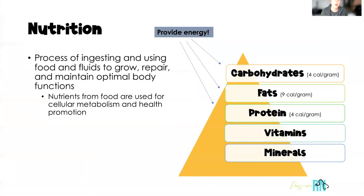When we think about nutrition, the process of nutrition is ingesting foods and then our body using those foods and fluids to grow, repair, and maintain optimal body function. Those nutrients, as we eat them, travel through our GI tract. When they hit the small intestine, they are transferred into the bloodstream, and from the bloodstream they can be used for cellular metabolism and overall health promotion.